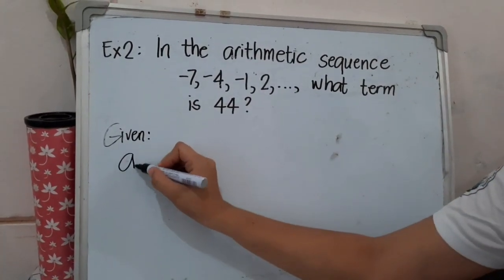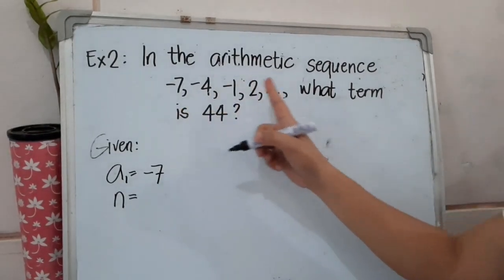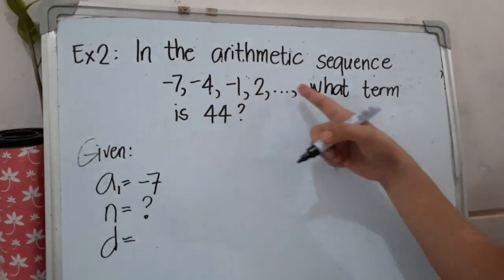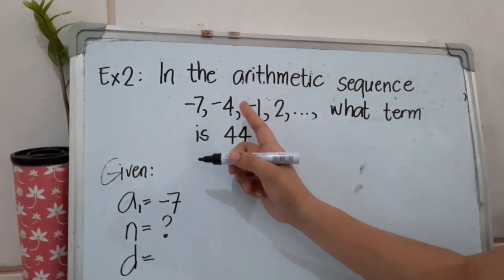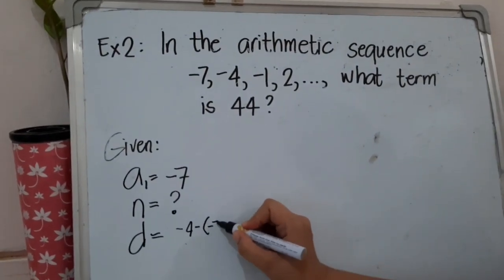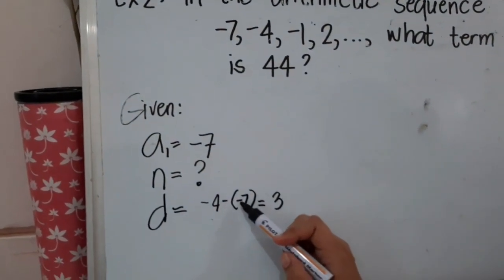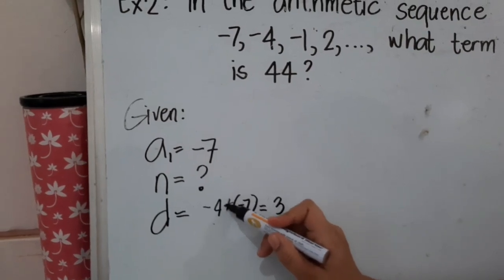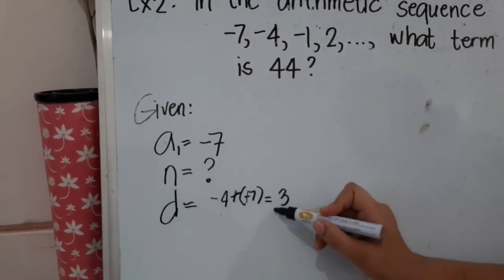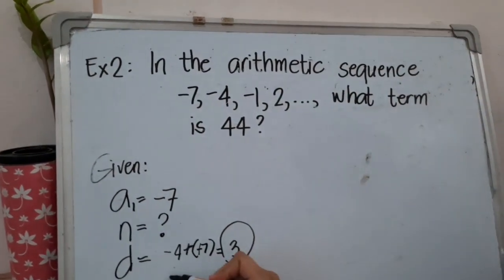Our first term: yes, that is -7. The number of terms: if you notice, we don't have the number of terms — n is unknown. The common difference d: we get it by subtracting the second term from the first: -4 minus -7. Applying subtraction property of equality, this becomes -4 + 7, which equals 3. So d = 3. Our last term: yes, it is 44.